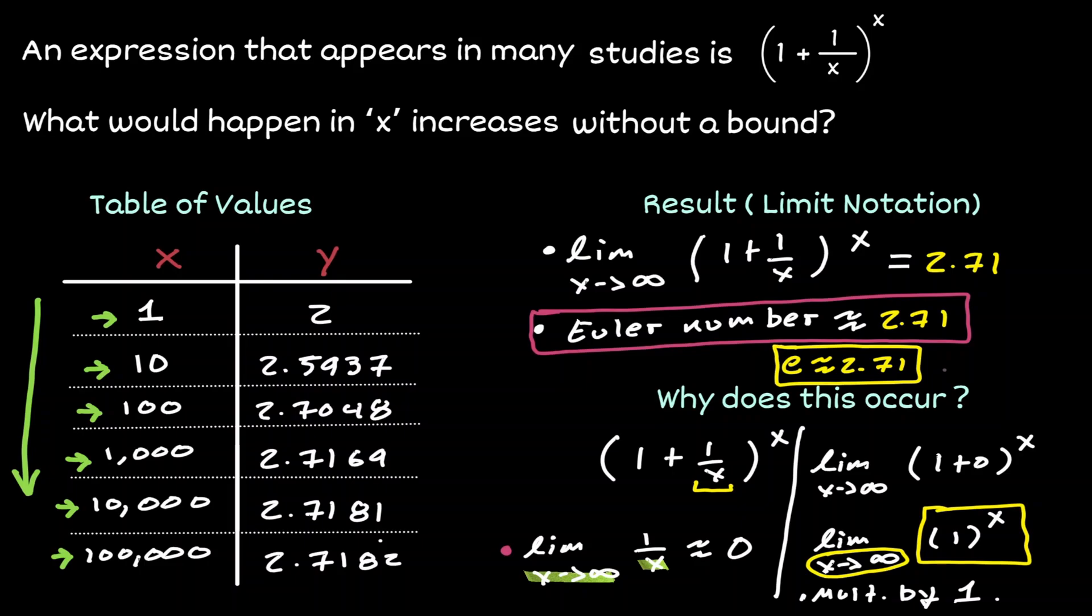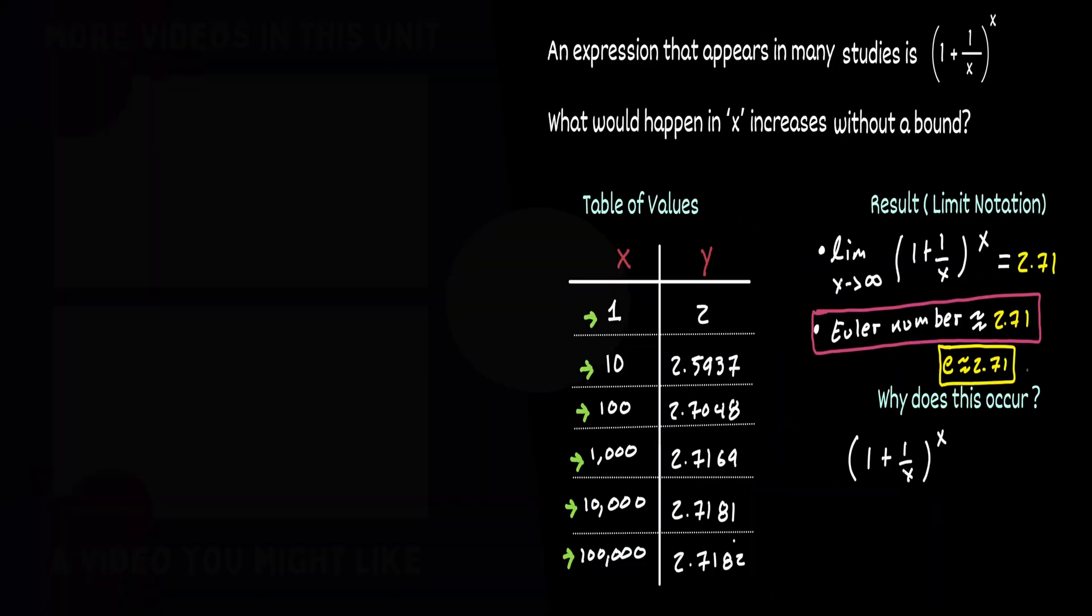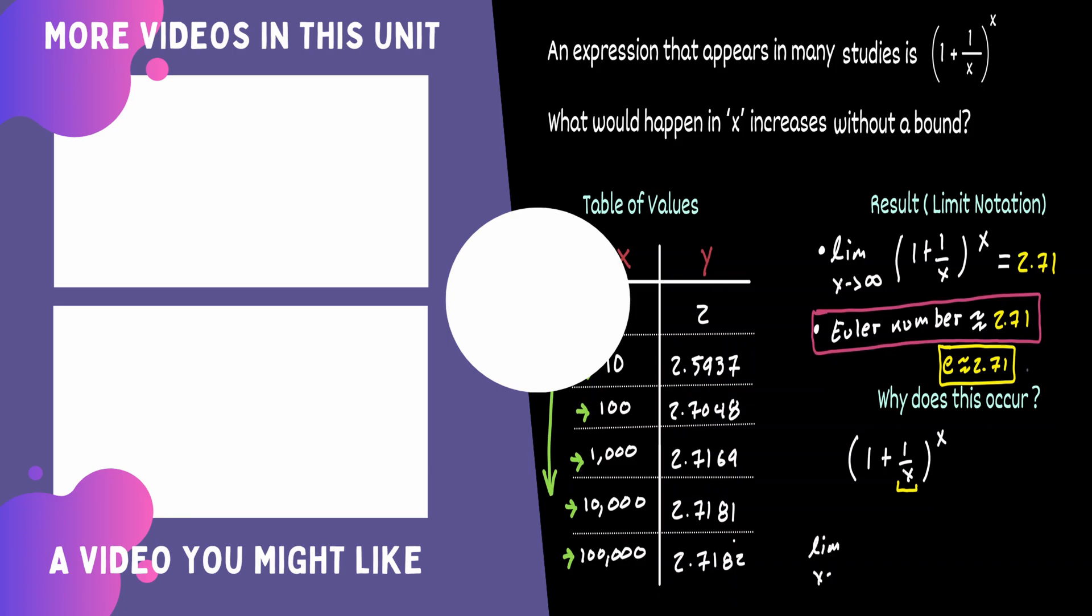And if we are multiplying by a number that is close to 1, we're not changing the previous value, then we are getting stuck at a specific number. And that number is 2.71, the Euler number. If you would like to continue learning about mathematics, you can check out the videos on the left.